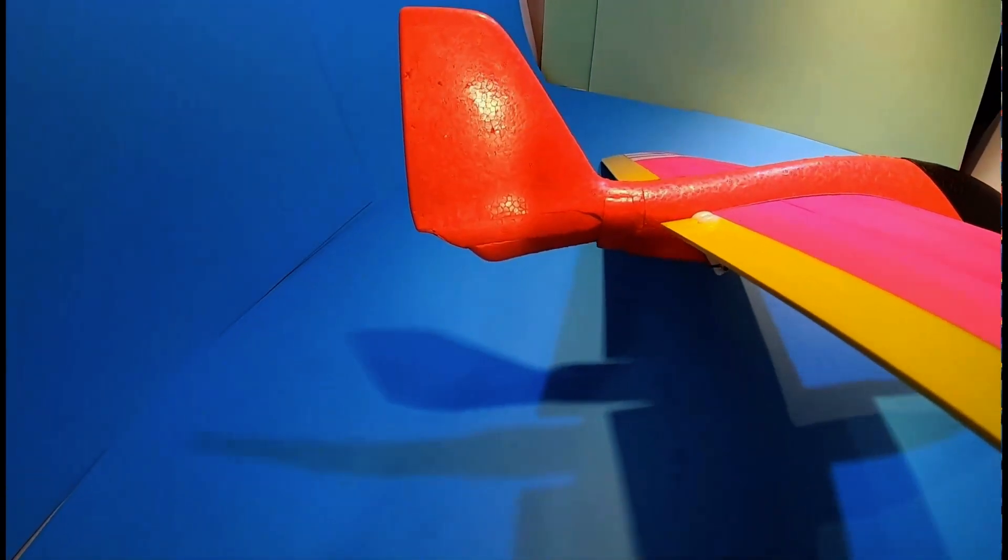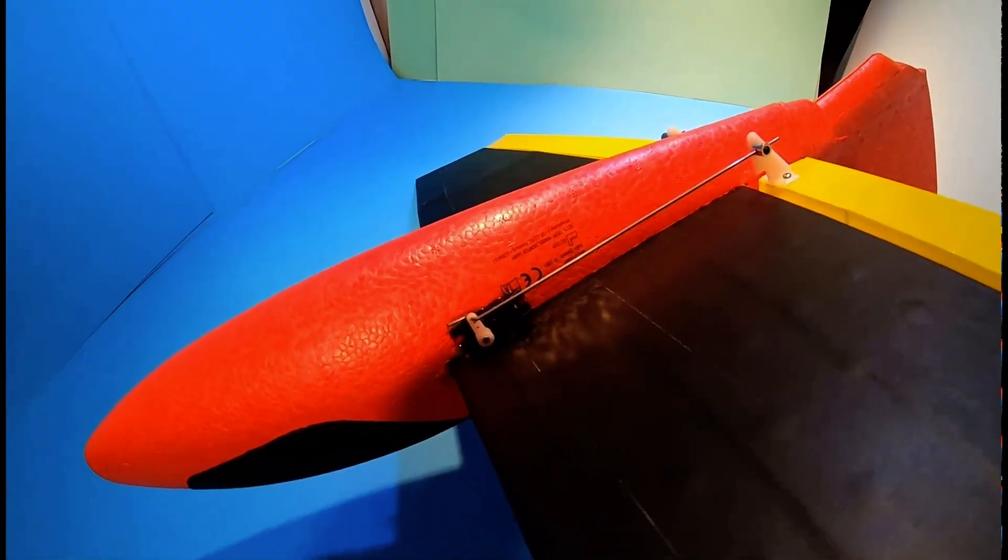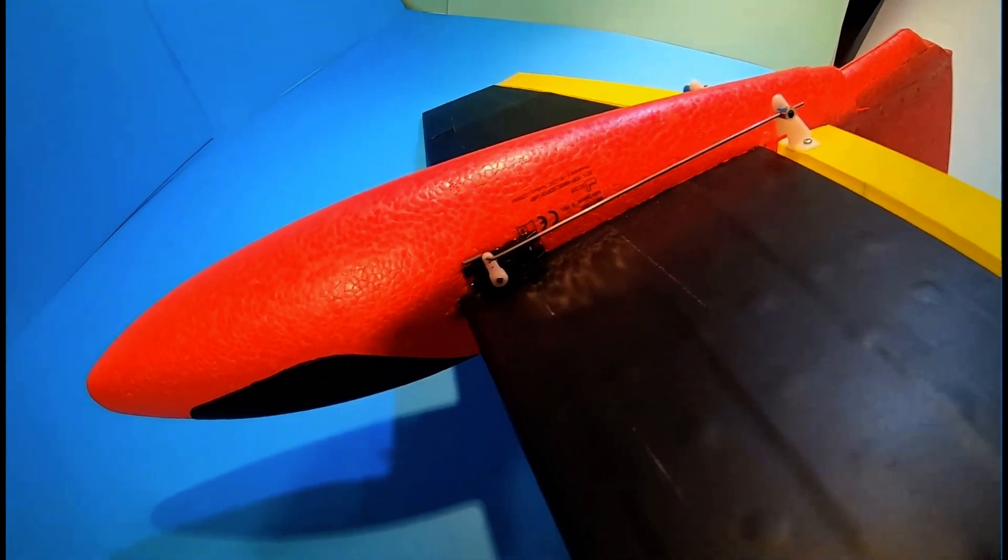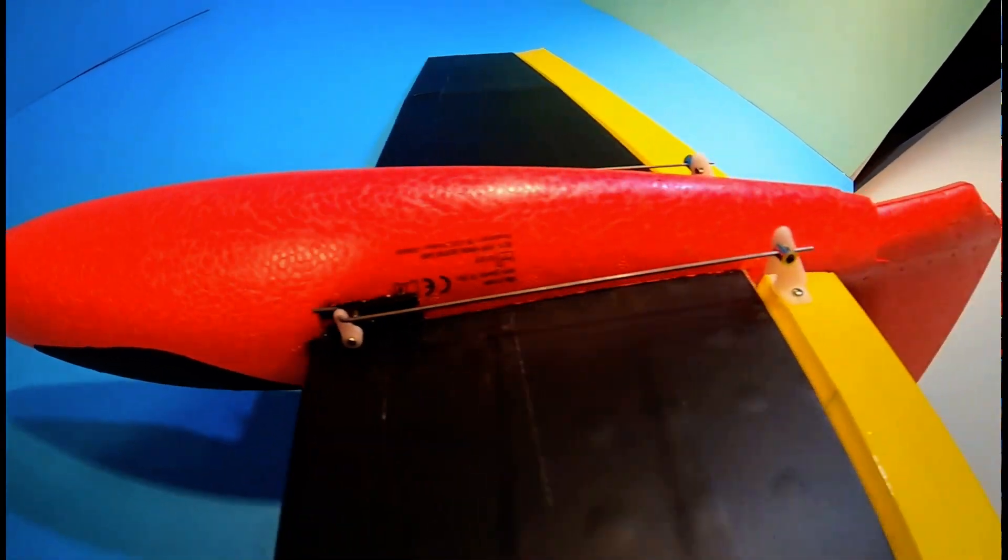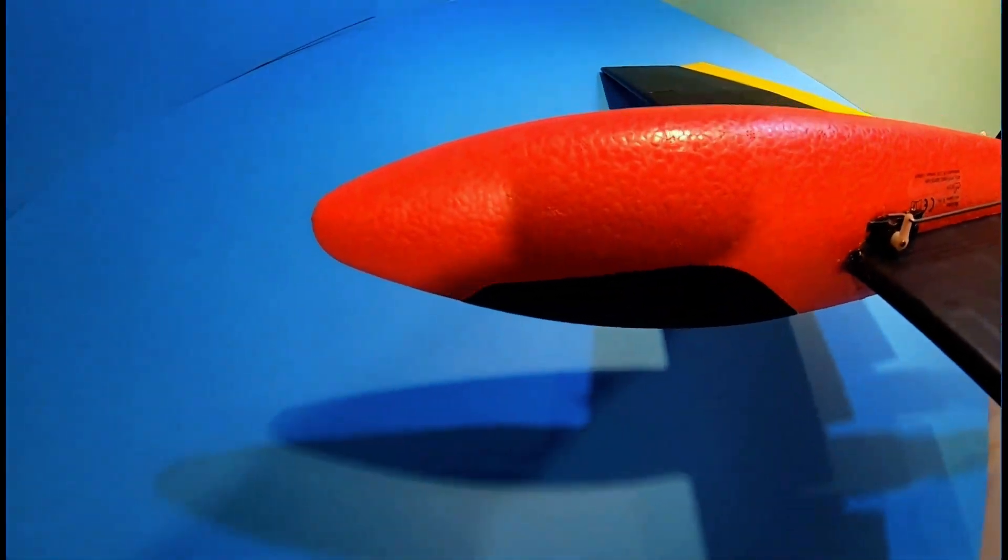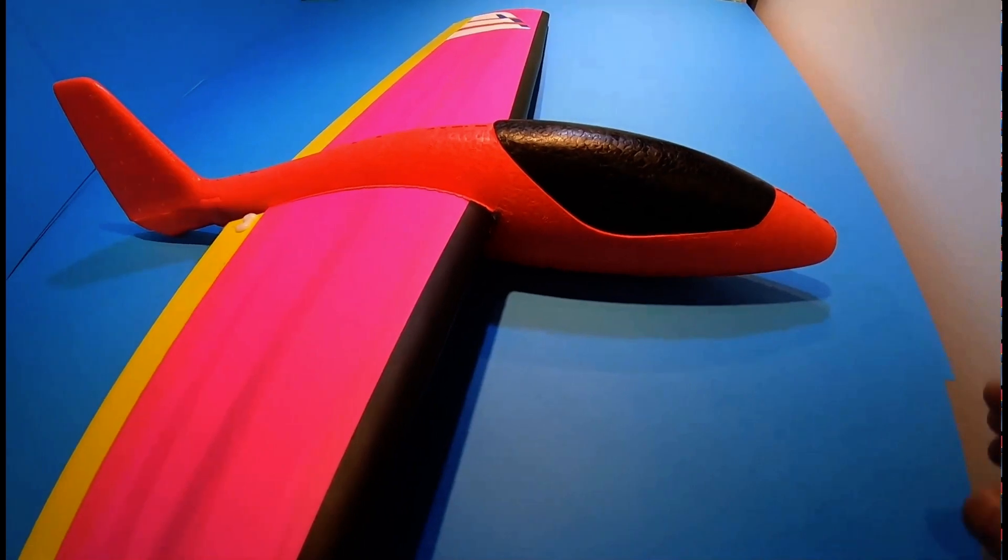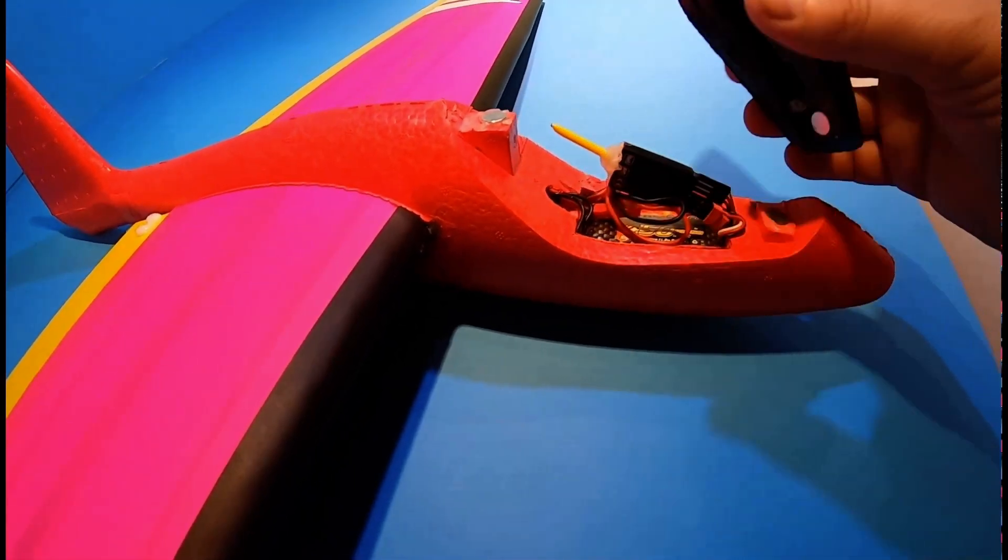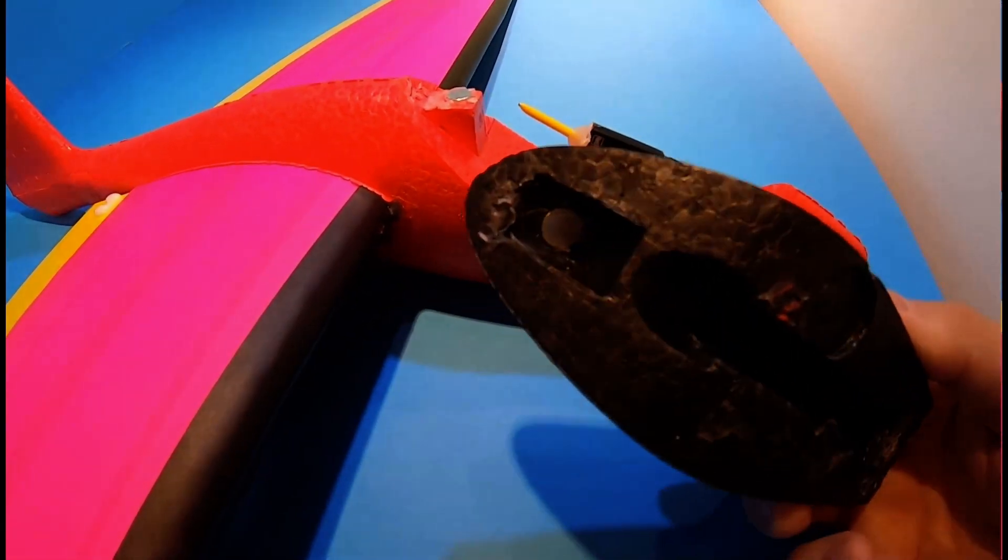The tail is put back on, the servos are in. For the canopy catch this time I've managed to use magnets on this one. There's the magnets I've used.